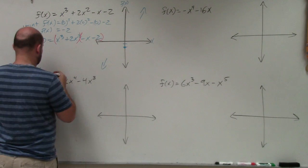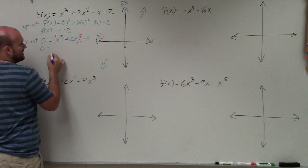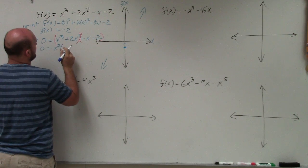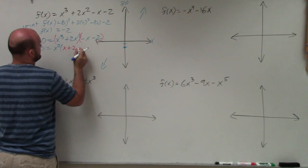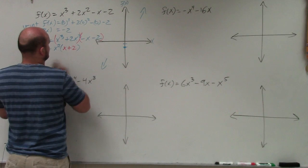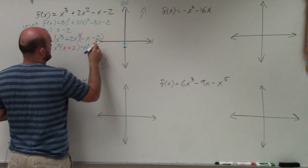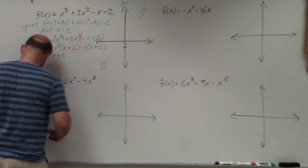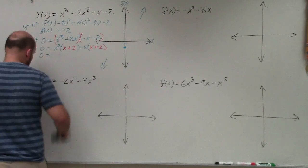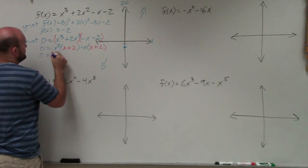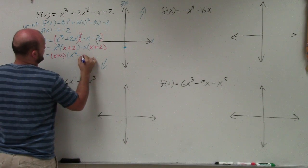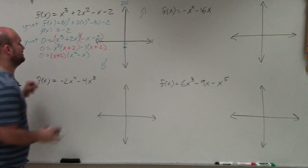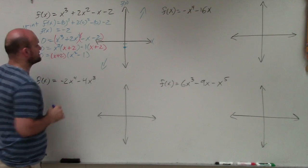I'm going to group the first two terms and the last two terms. Factor out the GCF — these have in common an x², and when I factor out x² I'm left with (x + 2). Then over here, I factor out a negative 1, and when I factor out a negative 1, I'm left with (x + 2). Now I can factor out a common factor of (x + 2), and I'm left with x² minus 1.